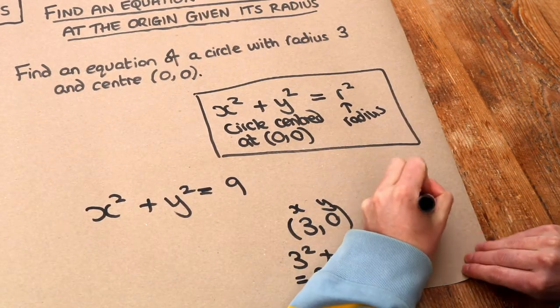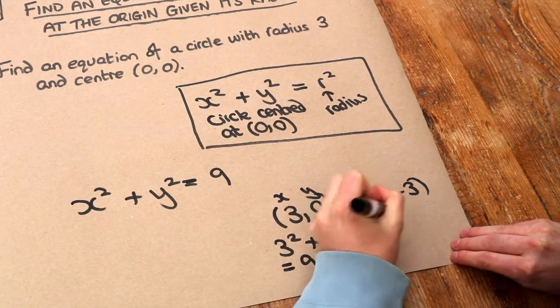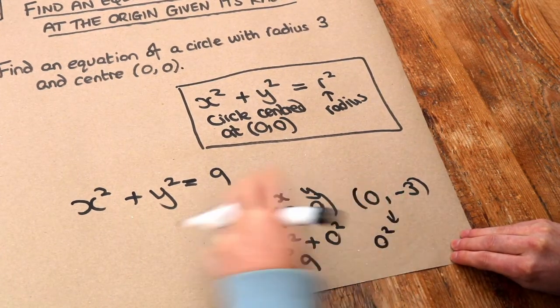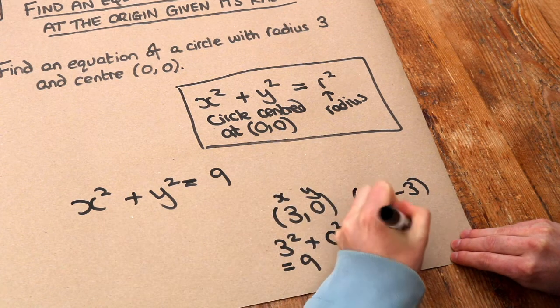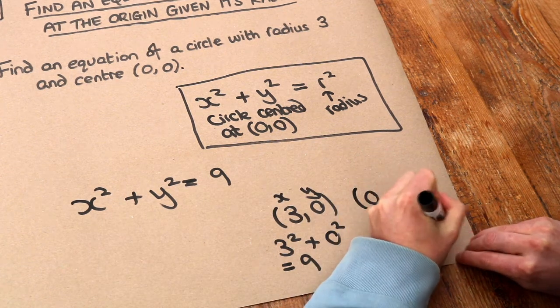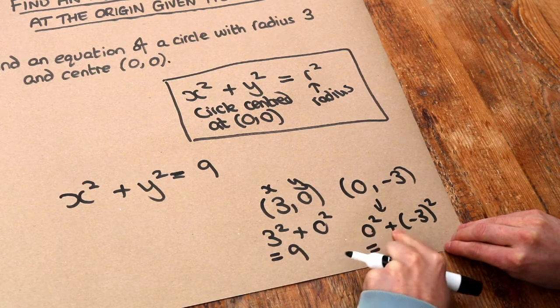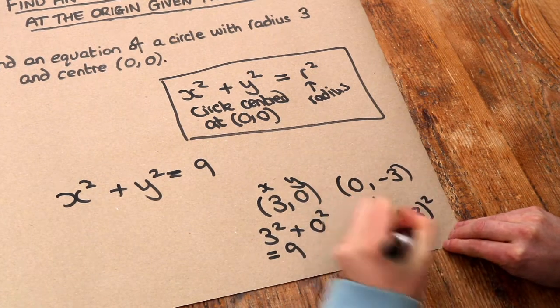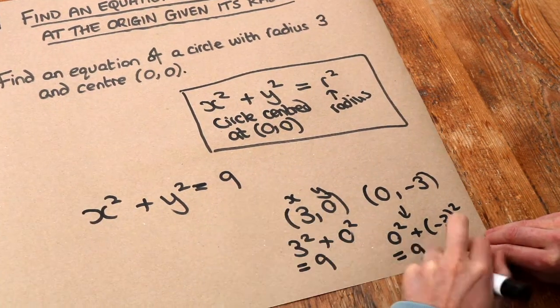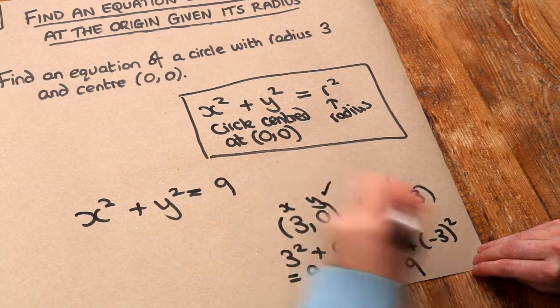Similarly, if we had the point (0,-3), that would be on the circle. If we substitute into the equation, 0² + (-3)² equals positive 9, which is correct—it equals 9. So again, this point would be on the circle as well.